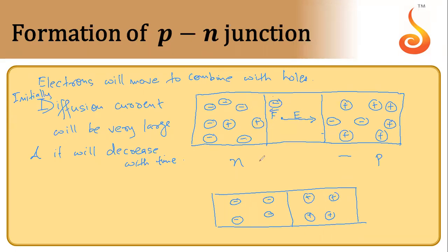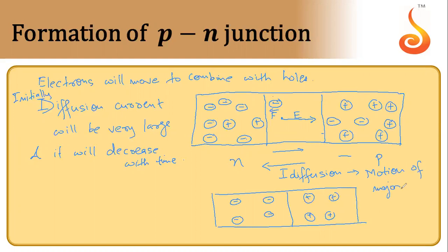Some of the electrons will have sufficient energy such that they are able to move from here to here. When the electron is moving in this direction, the current will be in the opposite direction, and that current is known as diffusion current. Diffusion current is due to the motion of majority charge carriers.